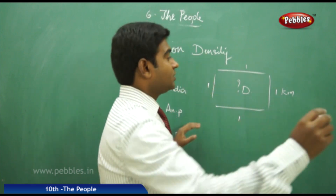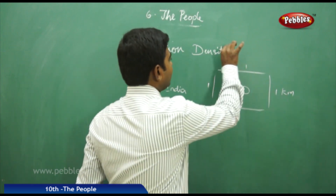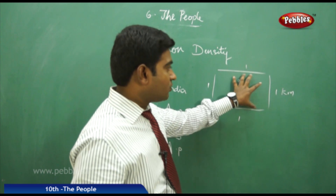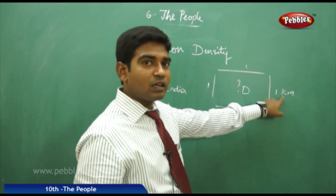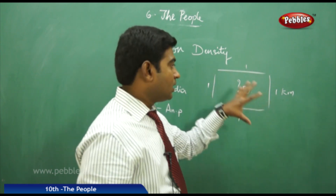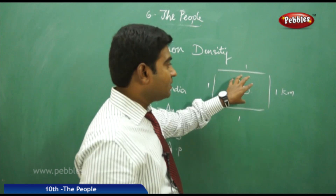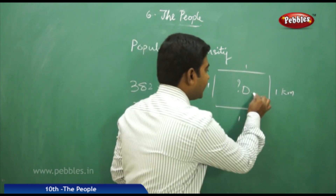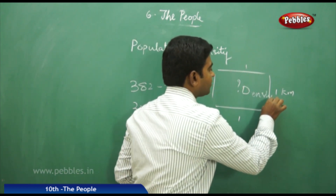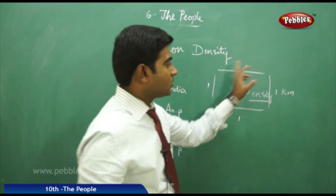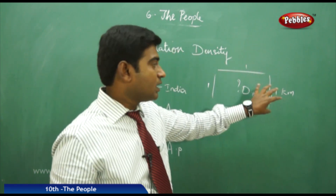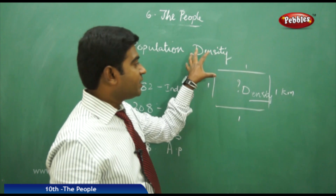Population density plays a crucial and vital role in all these issues. Density means the number of people living in an area of one square kilometer. The number of people living in a particular area per one square kilometer is called density.